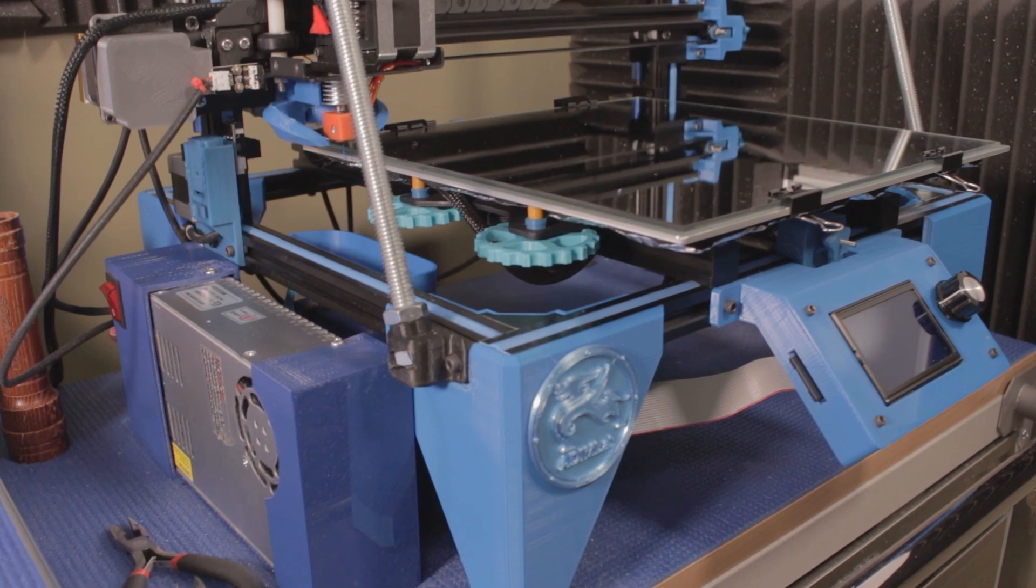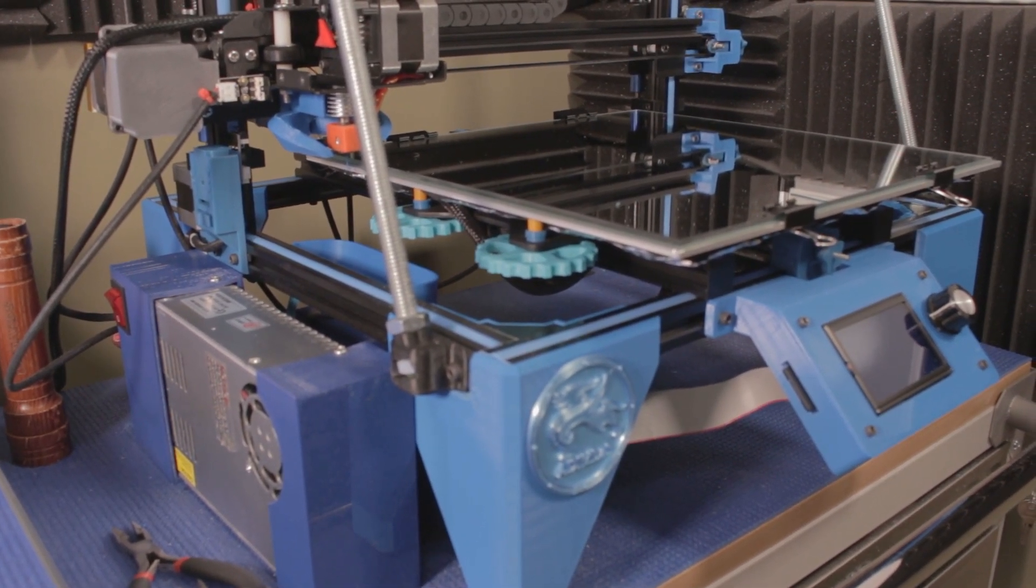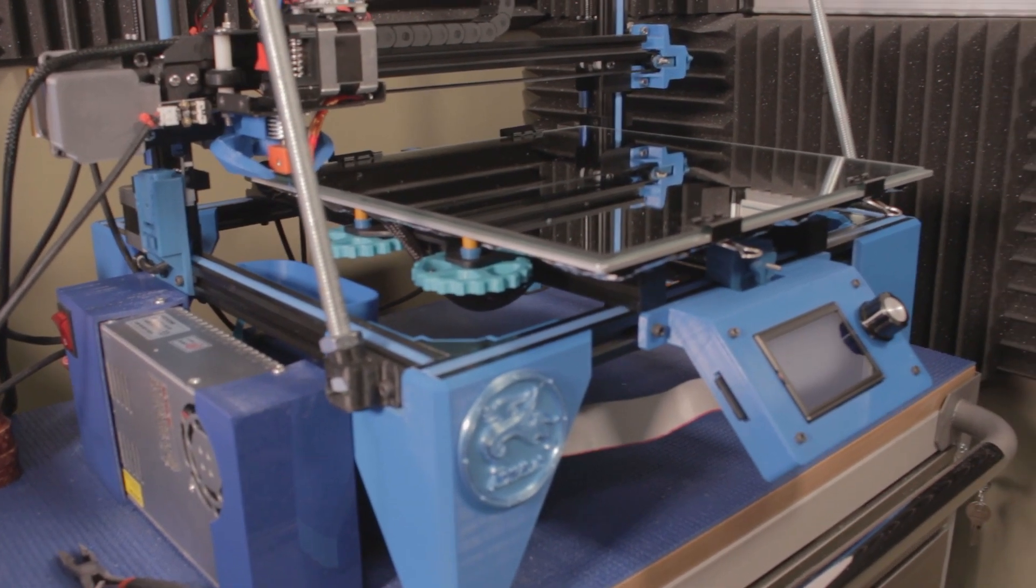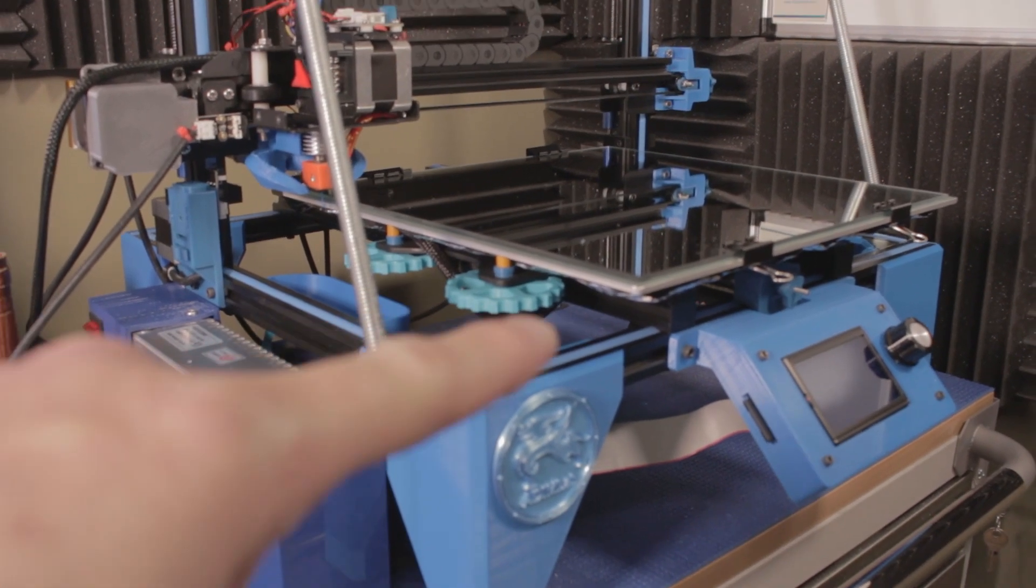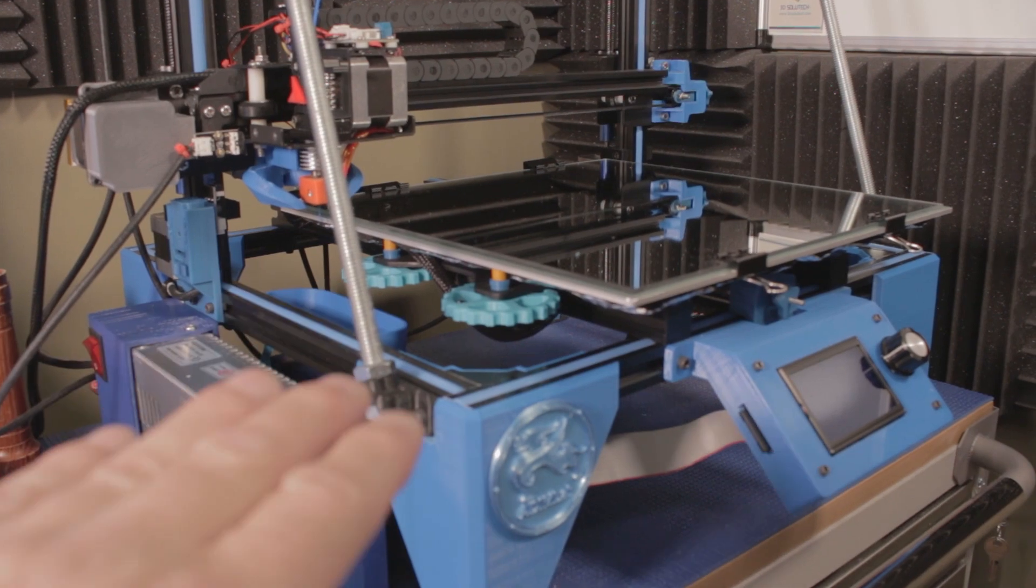So the printer's been actually working really well here for about the past couple of months. And I've gotten everything dialed in pretty close. But the situation that I've been having is keeping the bed level, and whenever I try to level it's becoming harder and harder.